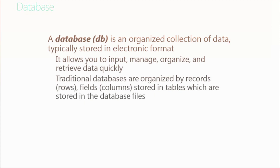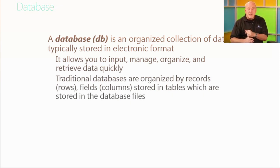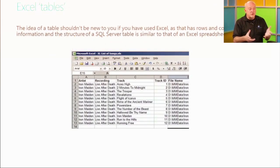Traditional databases are stored in rows or records, and then we have columns, attributes, or properties — you'll hear those terms synonymously — referring to the type or amount of content stored in a database. You may be thinking, well, that sounds a lot like a good old Excel spreadsheet.